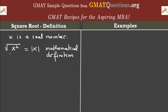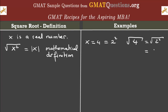Essentially, if you're given any real number, the square root of that real number is the positive root of that number. For example, if x is equal to 4, we know that 4 is equal to 2 squared. Then the square root of 4, or 2 squared, is equal to only 2. This is a mathematical convention.